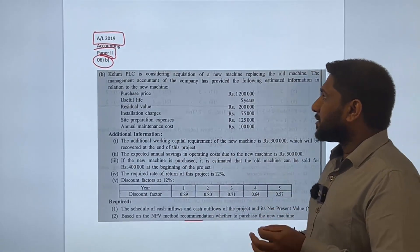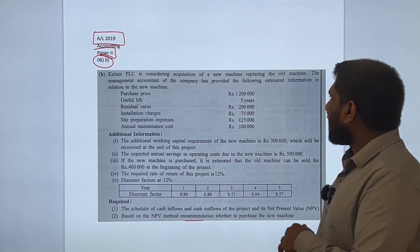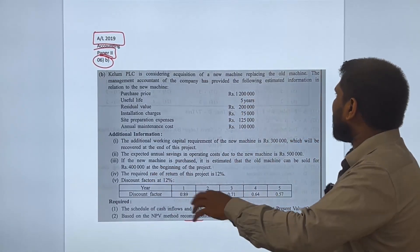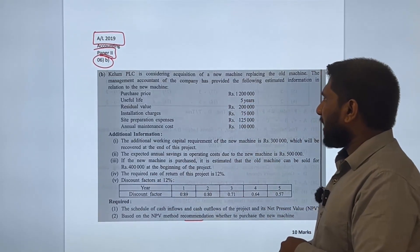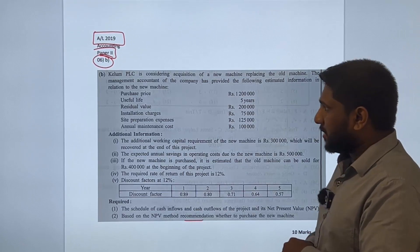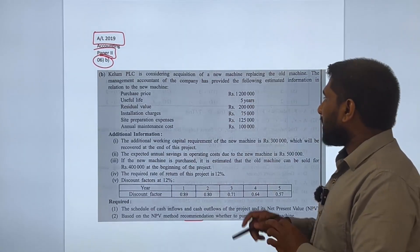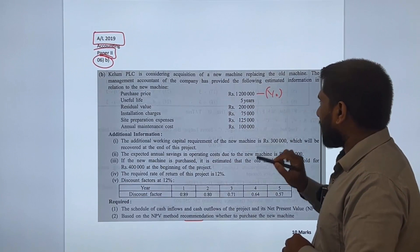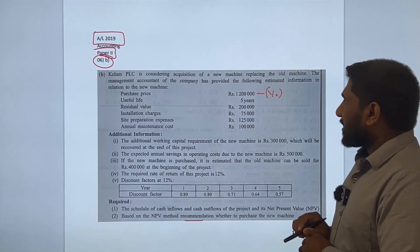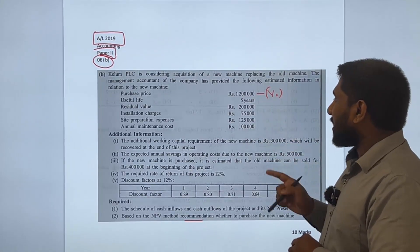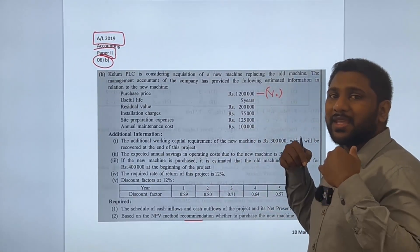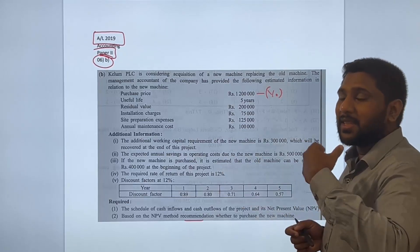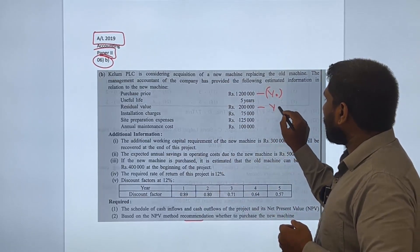Calum PLC is considering acquiring a new machine to replace an old machine. The management accountant has provided estimated information about the new machine. The purchase cost is a cash outflow for year 0. The useful life of the asset is 5 years. After 5 years, the residual value is 200,000 — this is a cash inflow for year 5.